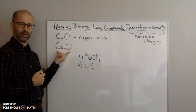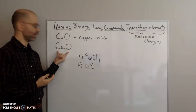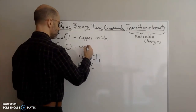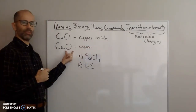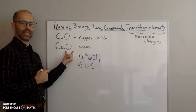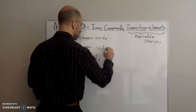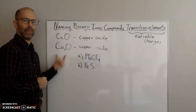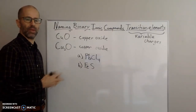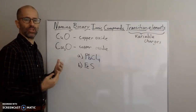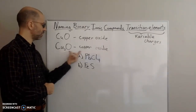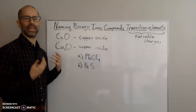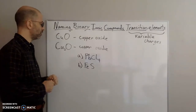Then we have this compound here, Cu2O, and we would do the same thing — copper followed by oxygen, drop the ending and add -ide to get oxide. So right away you can see a problem: we have two different compounds, but if we use the previous naming method and just put the names of the ions together, both compounds end up with the exact same name — copper oxide — yet they are different compounds. We can't have that, so we need a different way of naming.